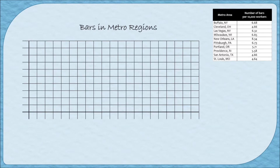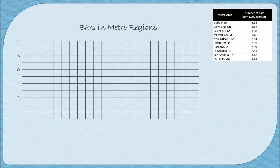Next we're going to label the vertical axis. It should always start at zero on the bottom, and then we have to figure out how high it needs to go. To do that I look in the frequency column — the number of bars per 10,000 workers — and find the highest value. In this case it's 8.34, so I need to make sure my vertical axis goes up to at least 8.34. I'm going to label every other line and also label my vertical axis: 'Number of bars per 10,000 workers.'